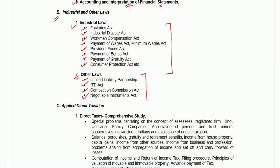These are all the other laws that need to be prepared. Out of these, in other laws, LLP is important and Negotiable Instrument is also important. In industrial laws, Industrial Dispute Act is important, along with Payment of Wages, Provident Fund, Bonus, and Gratuity. So these are all important and you should prepare for these topics.